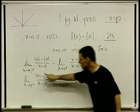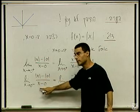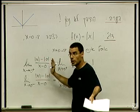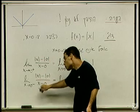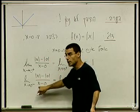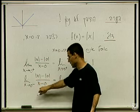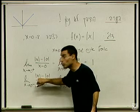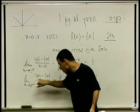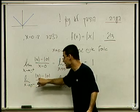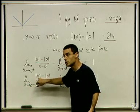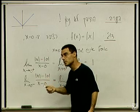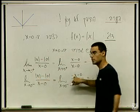ה-x הוא שלילי, אני לא נוגע בו. אם אני אשים פה מינוס, הפכתי משלילי לחיובי. מה זה ערך מוחלט x עבור x-ים שליליים? למשל, מה זה ערך מוחלט של מינוס 5? 5. כלומר, אני צריך לשים לו מינוס ל-x. זה מה שעשיתי.